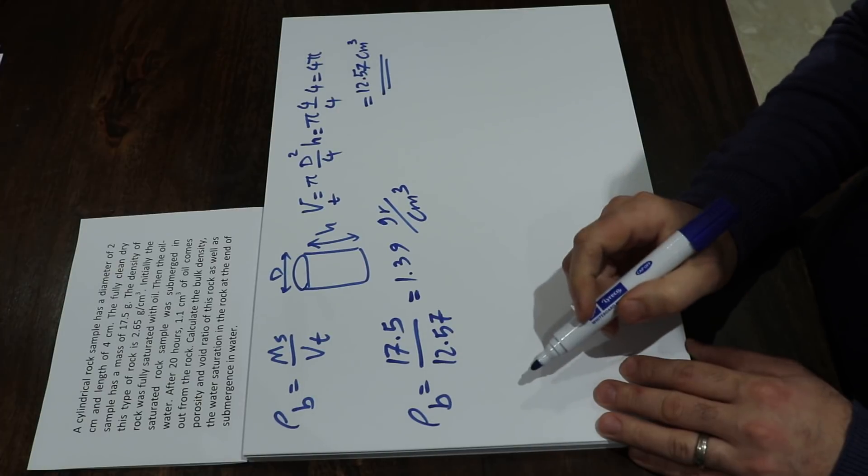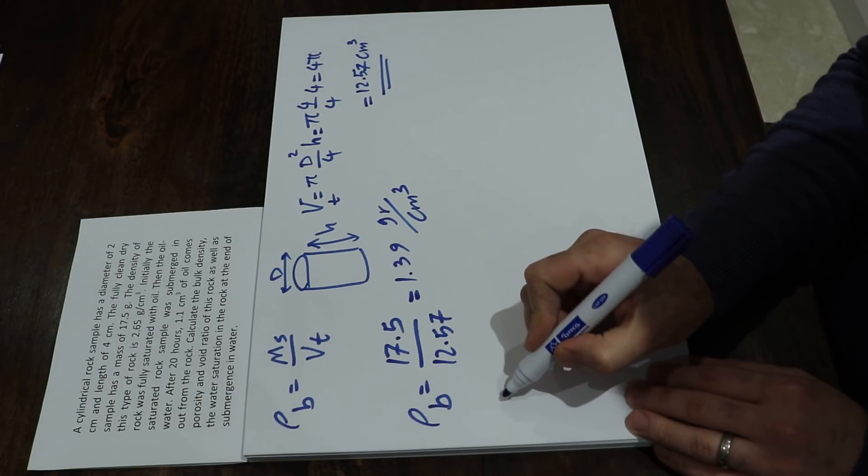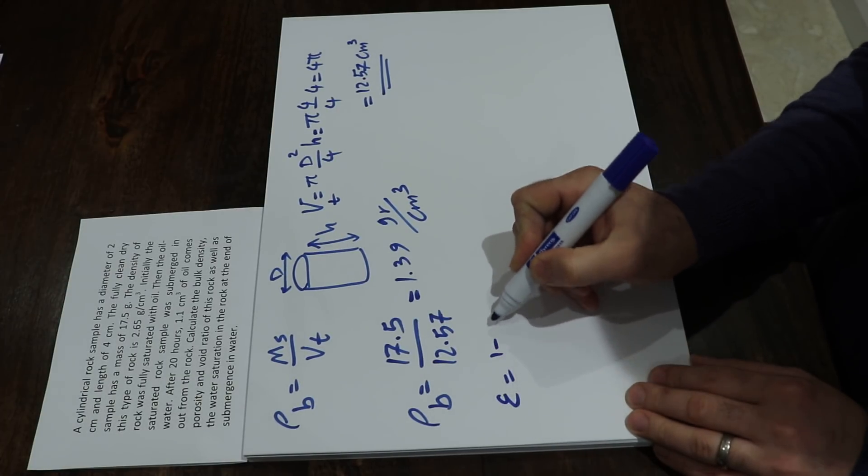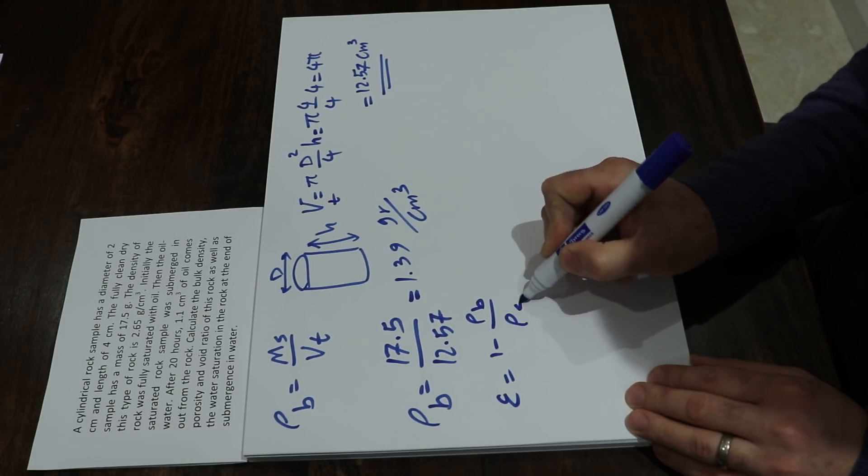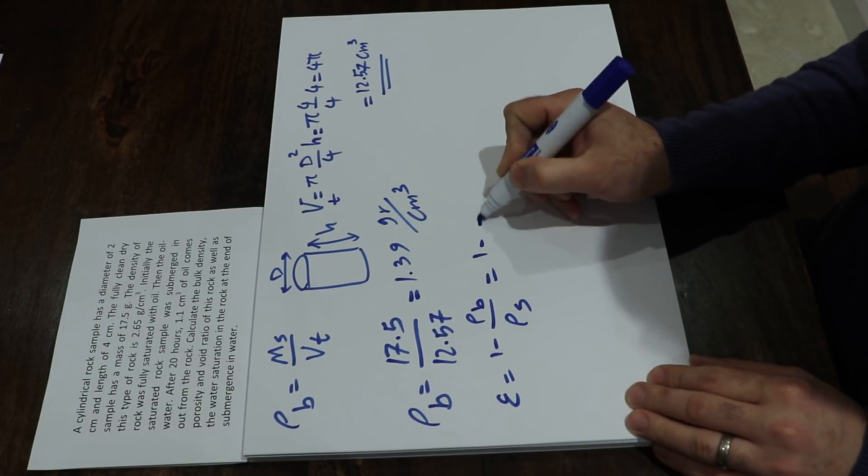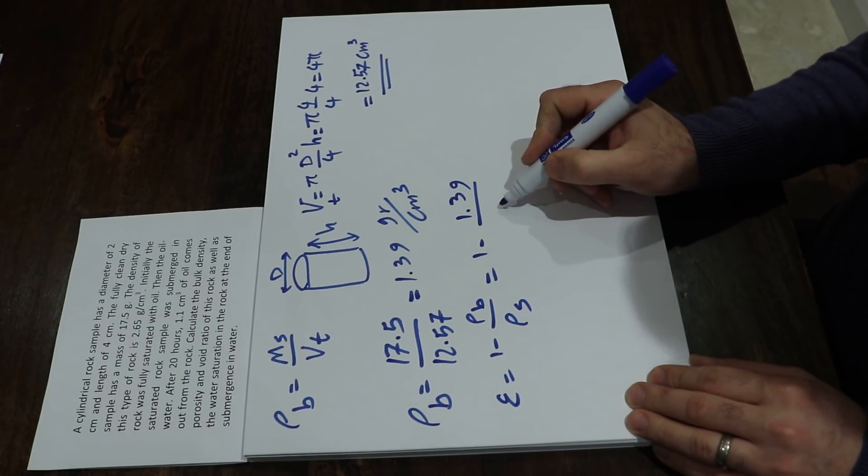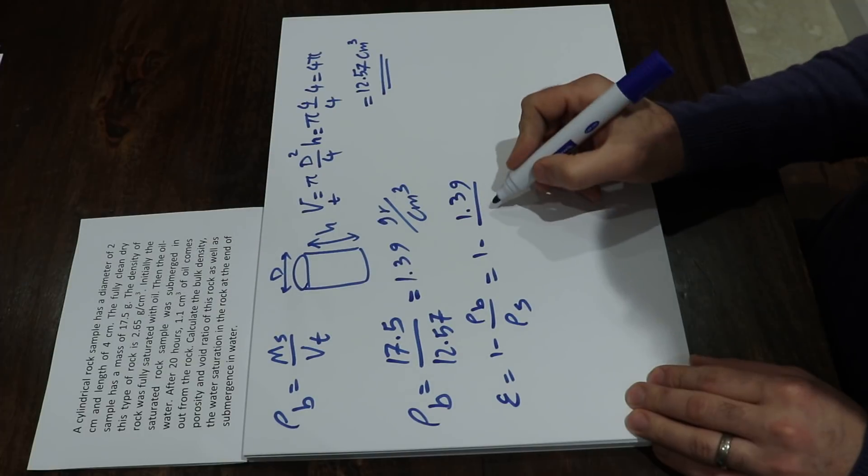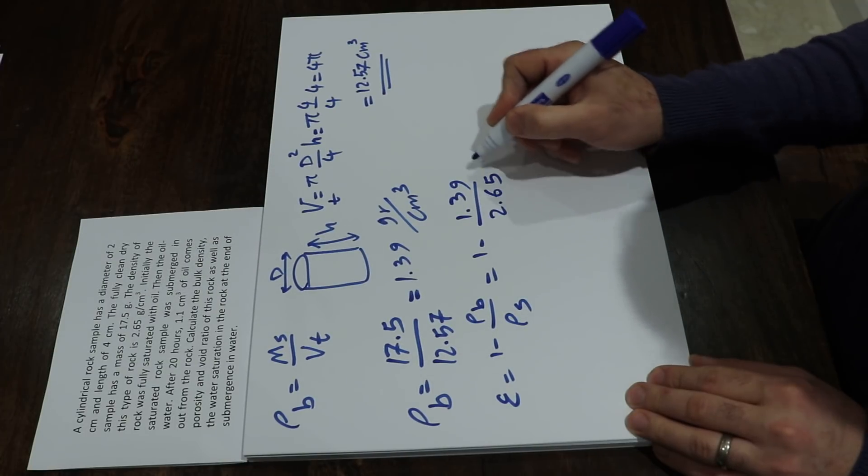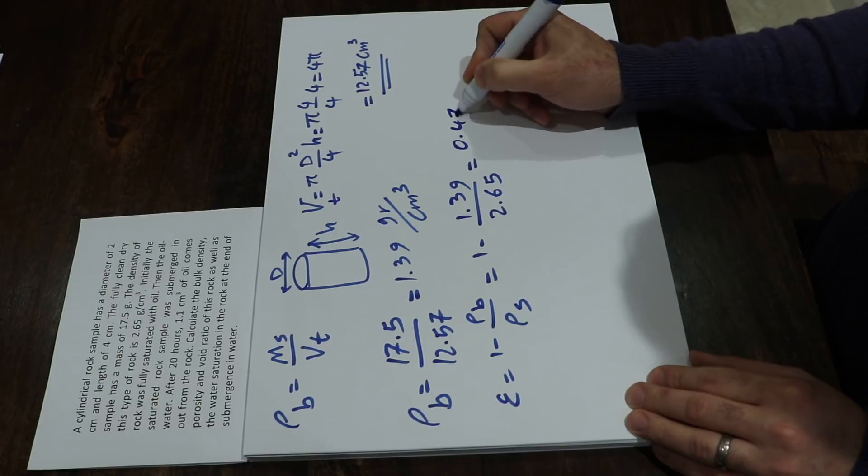The second part of this question is about porosity. We know that the porosity is equal to 1 minus rho B divided by rho S, which will be equal to 1 minus rho B already calculated, that is 1.39 divided by rho S, that is particle density given in the question, which will be equal to 0.475.